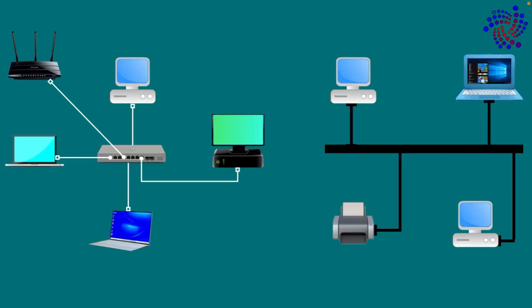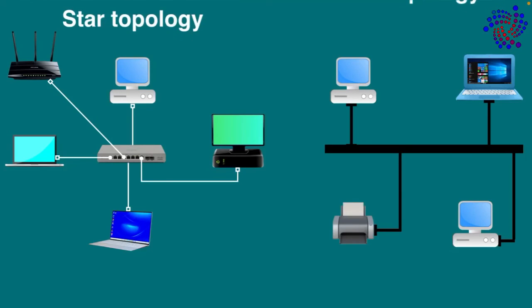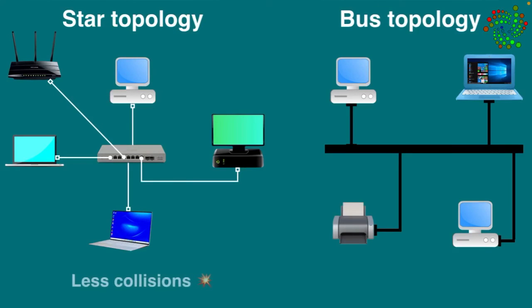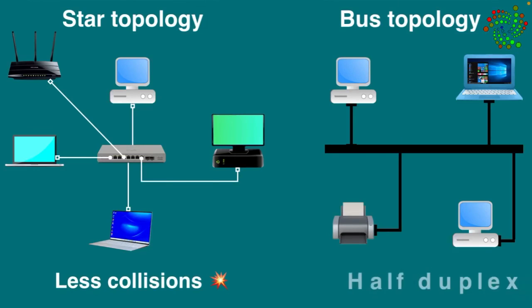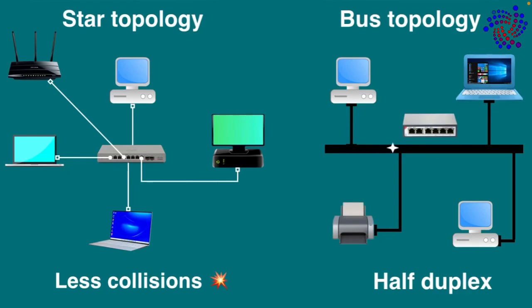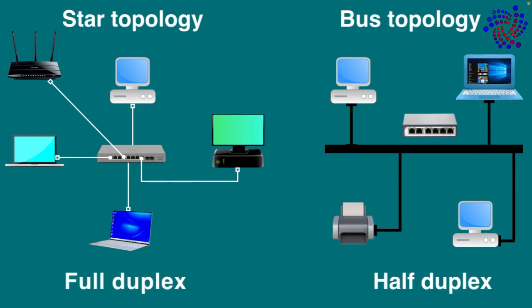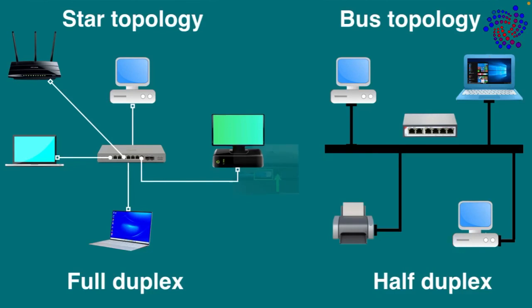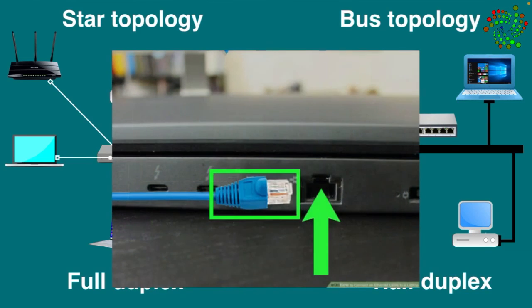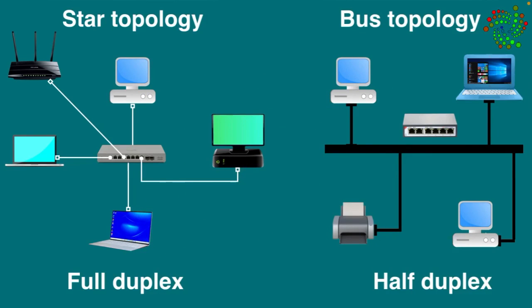Before we end, here are some important points worth mentioning. Different types of network topologies are used in Ethernet, such as star, ring, bus, and more. Star topology is more useful compared to others because it has fewer collisions. Early Ethernet networks were half-duplex because they used hubs where data could travel only in one direction. Modern Ethernet networks are full-duplex because they use switches where data travels in both directions. You can find an Ethernet port on the back or side of your device, where you plug in one end of the cable and connect the other end to the router.